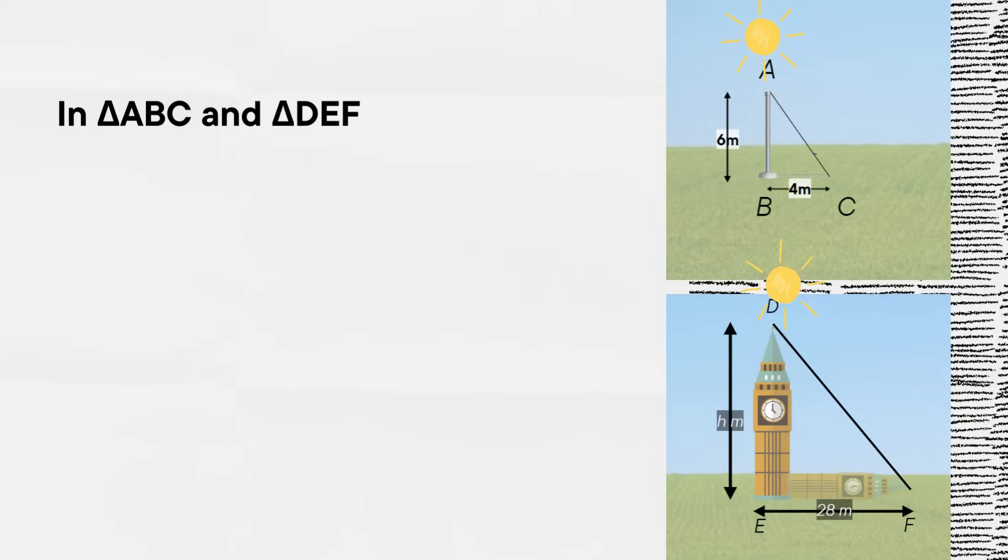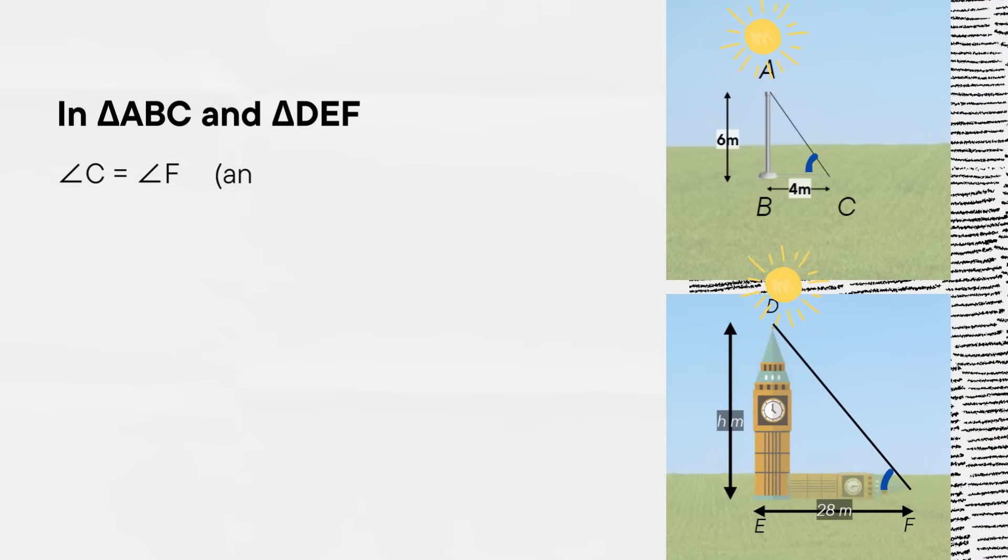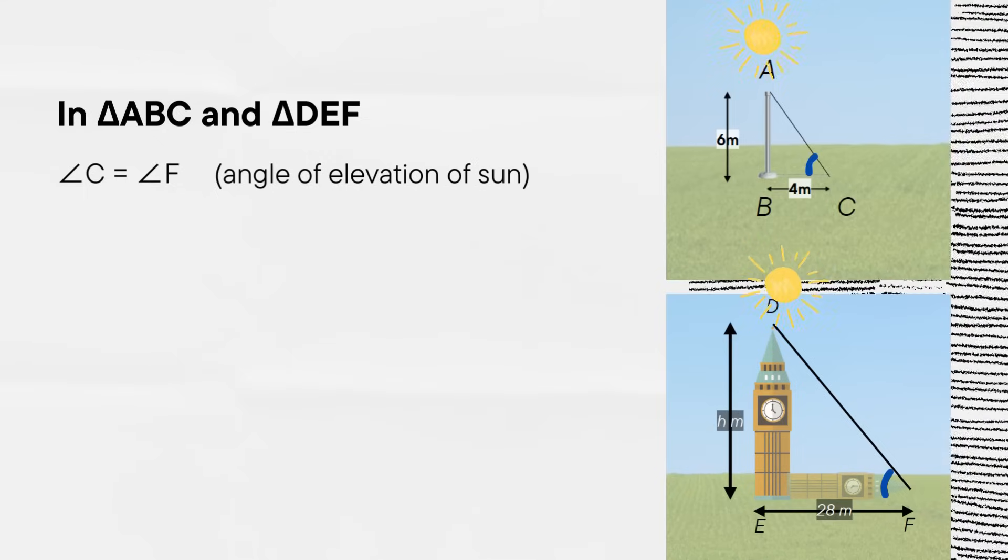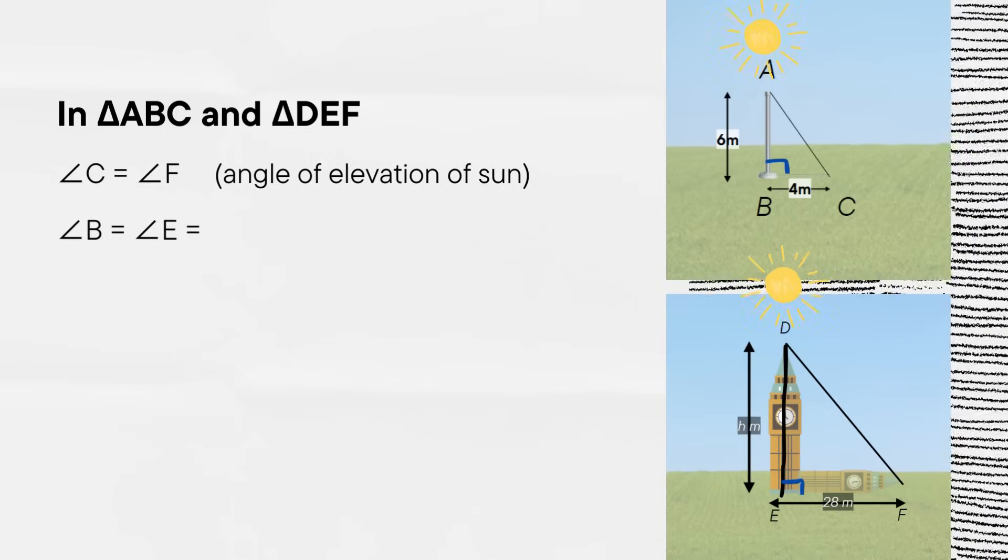Now in triangle ABC and triangle DEF, angle C is equal to angle F because angle elevation of the sun is the same. Angle B is equal to angle E, both equal to 90 degrees.